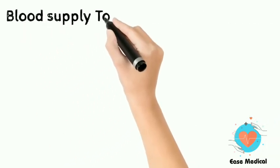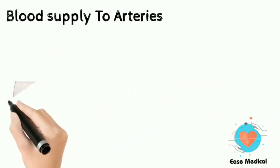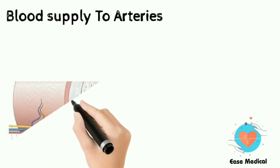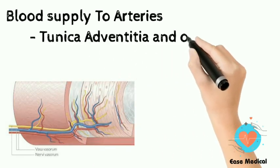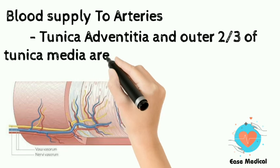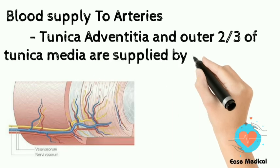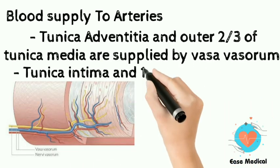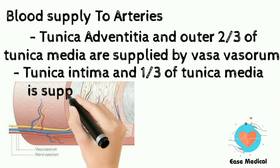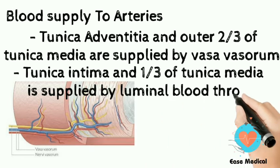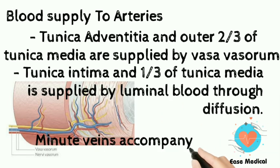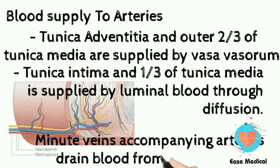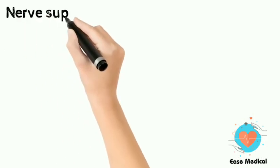In arteries, the tunica adventitia and outer two-thirds of the tunica media are supplied by vasa vasorum. The tunica intima and inner one-third of the tunica media are supplied by luminal blood through diffusion. Minute veins accompanying arteries drain blood from the arterial wall — this is the supply of vasa vasorum.